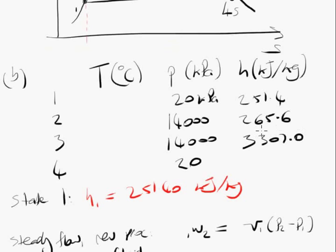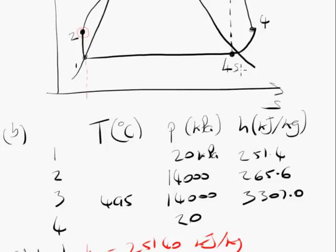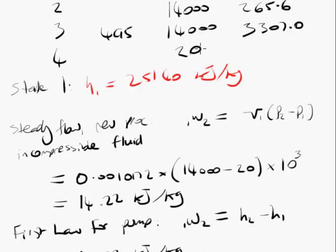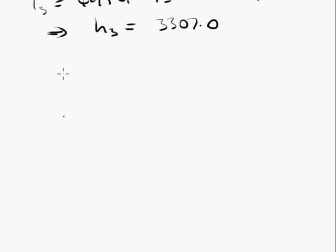So we've come to state four. We can't deal with state four yet. Before we deal with state four, we're going to deal with state four s. What we know about state four s is its pressure, which is the condenser pressure. And we know its entropy, which is the entropy of state three. So let's write that stuff down. At state four s, we have p4s equals p4 equals 20 kilopascals. s4s equals s3.